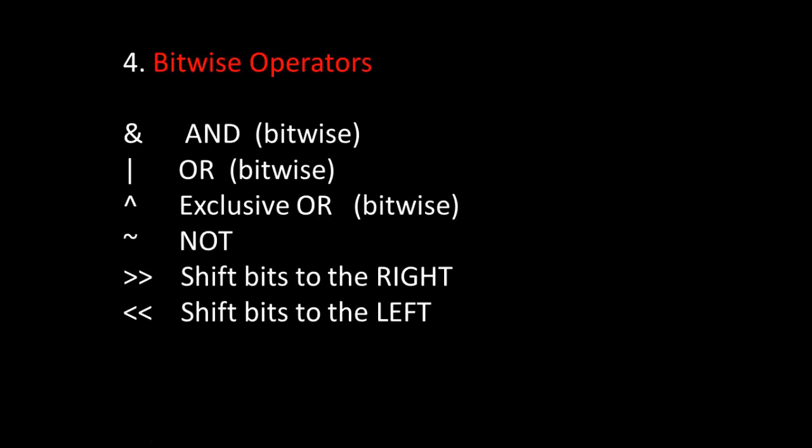Moving on, now we come to the bitwise operators. For bitwise operators, we use a single ampersand for and, a single pipe symbol for or, the caret for exclusive or, the tilde for not, and then two greater than symbols to shift bits to the right and two less than symbols to shift bits to the left.